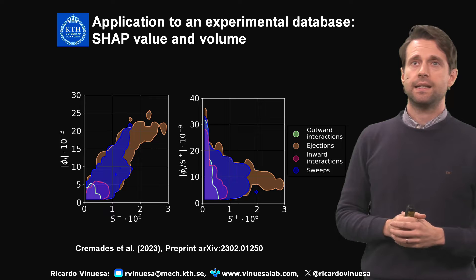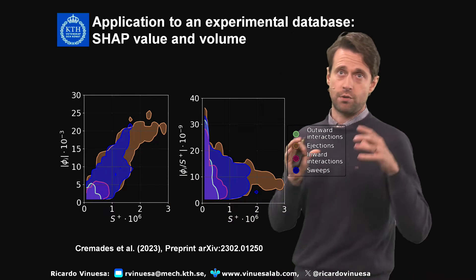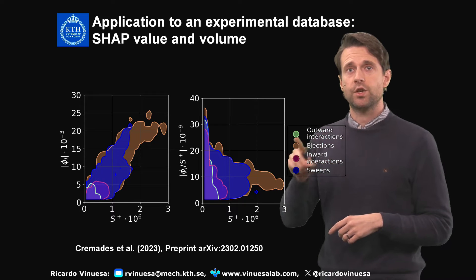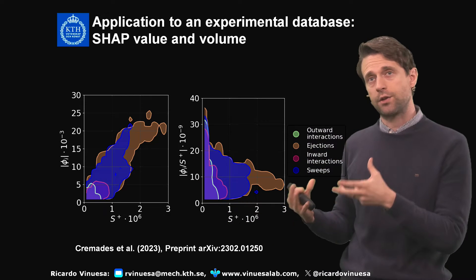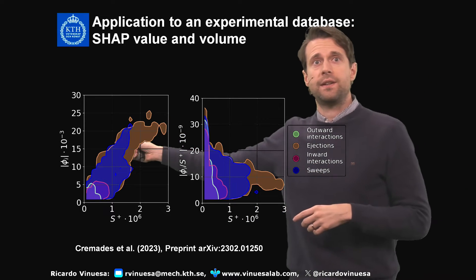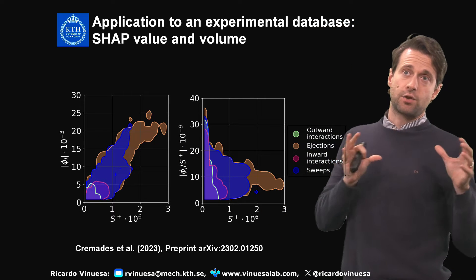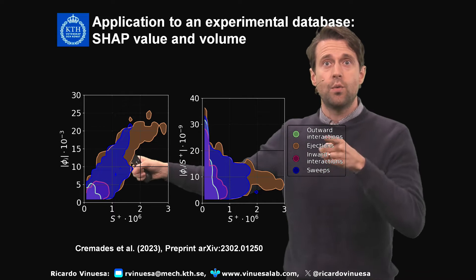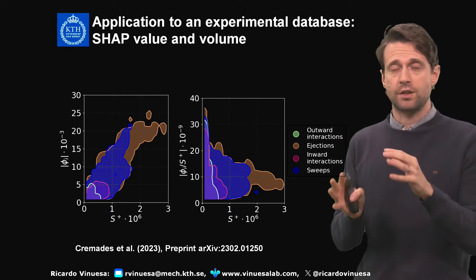Looking at the results: we show the SHAP value on the vertical axis as a function of the surface of the structures — now surface rather than volume — in scale-linear units. The colors represent the type of structures found via quadrant analysis. These are joint PDFs representing the joint probability distribution function of importance and structure size. We find a good correlation between the SHAP value and the size of the structure, which is exactly the result found in the DNS. Interestingly, ejections shown in brown are still the most important, but the sweeps shown in blue show increased relative importance — which is well known from the turbulence literature as Reynolds number increases, so this corroborates a known result.